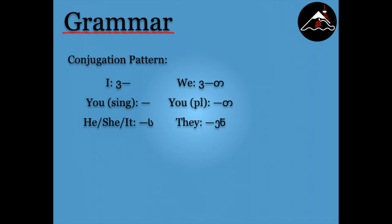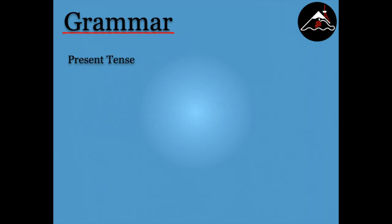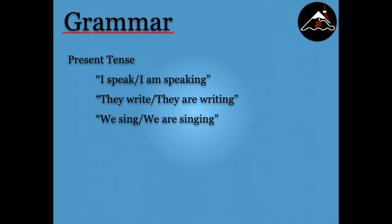Instead, Georgian uses a system of pronoun markers which are added to the verb's non-gerund form. In Georgian, the present tense is equivalent to I speak and I am speaking, they write and they are writing, and we sing and we are singing.